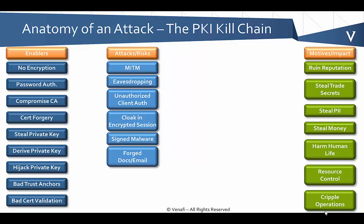Not encrypting will allow somebody to eavesdrop on sessions. Some organizations use password-based authentication, including for automated processes — if an attacker performs a man-in-the-middle attack, they can intercept that password and leverage it for future communications. CA compromise is another area: many attackers have focused on attacking CAs to get rogue certificates. Cert forgery by exploiting weak algorithms like MD5 or SHA-1 can also yield a rogue certificate, and attackers may also steal private keys directly.